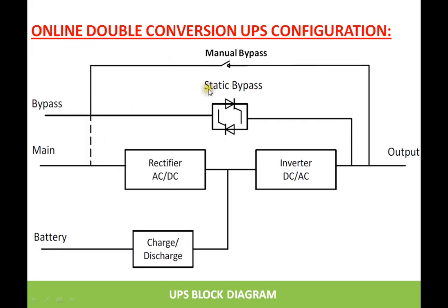This is the block diagram of this topology. There is a rectifier block which converts incoming mains to DC, and that DC is used for charging the battery bank. The DC is also fed to the inverter, and the inverter block converts the DC to AC, which is fed to the load. In addition to these blocks there are a static bypass switch and a manual bypass.